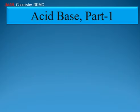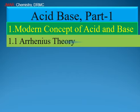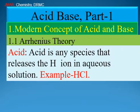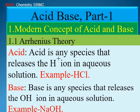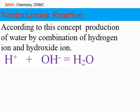First, we discuss the modern concept of acid and base. Arrhenius Theory: according to this theory, an acid is a species that releases hydrogen ion in aqueous solution — example is HCl. A base is any species that releases the hydroxide ion in aqueous solution — example is sodium hydroxide. For neutralization reaction, the production of water by combination of hydrogen ion and hydroxide ion is called a neutralization reaction: H⁺ + OH⁻ = H₂O.